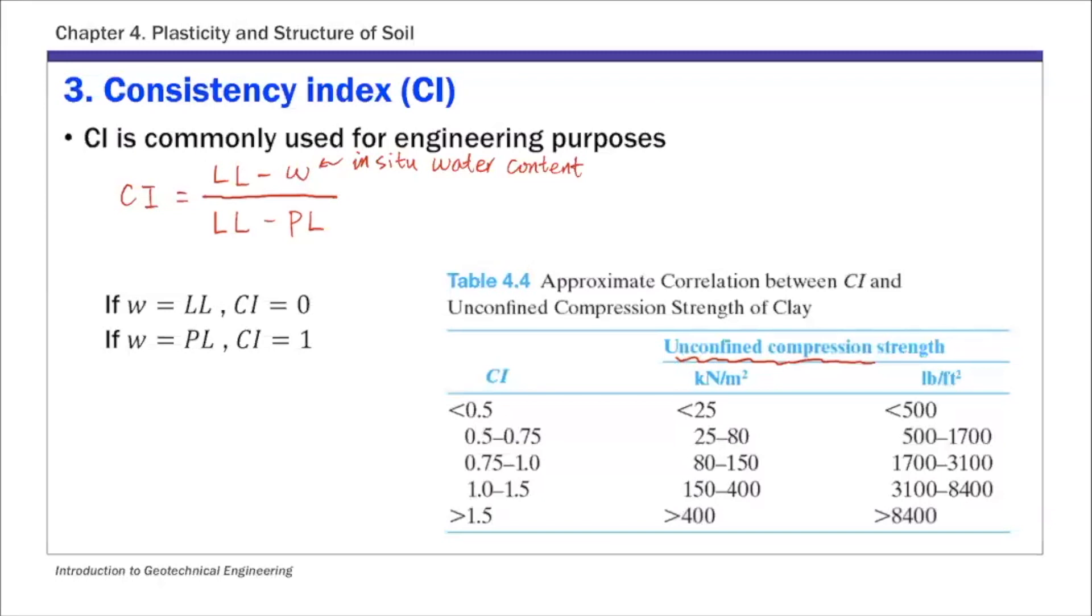For CI definition, if the water content—in situ water content—is the same as liquid limit, CI is 0. And when W is the same as PL, then CI is 1. So that's the third one.